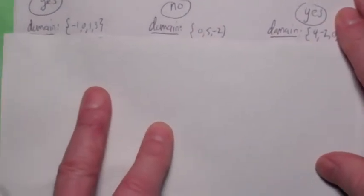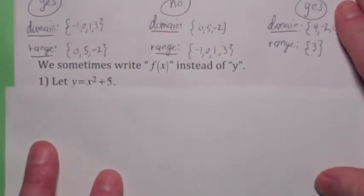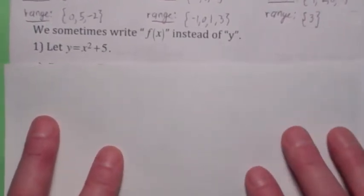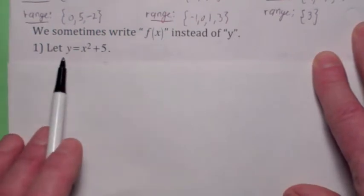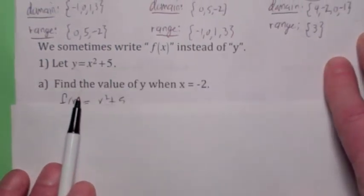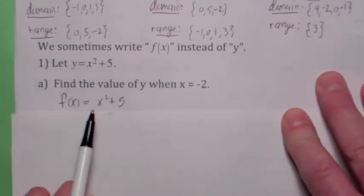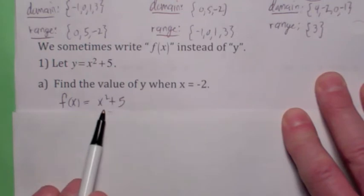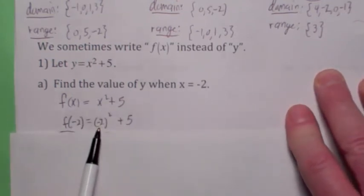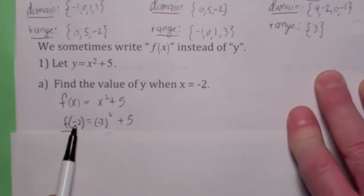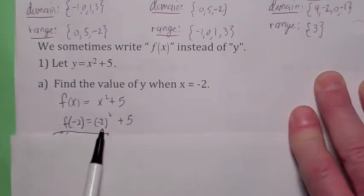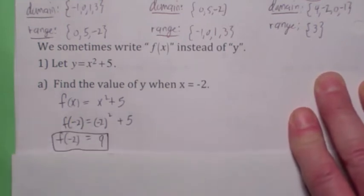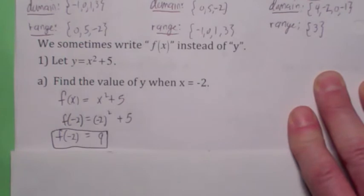One of the things in this section that's important is getting used to the idea of function notation. Whenever you have, in this case, an equation that defines a function, instead of writing y, a lot of times we'll write f instead of y. The reason why we do that is it's just a convenient way to evaluate numbers. For example, suppose you want to evaluate this function when x equals negative 2. If you're going to plug in negative 2 in for x here, why not just plug it in here for x also? And then what this says is f of negative 2 is the value of y when x is negative 2. So f of negative 2 equals 9. It's much easier to just say f of negative 2 than it is to say the value of y when x equals negative 2. So it's kind of an abbreviation.